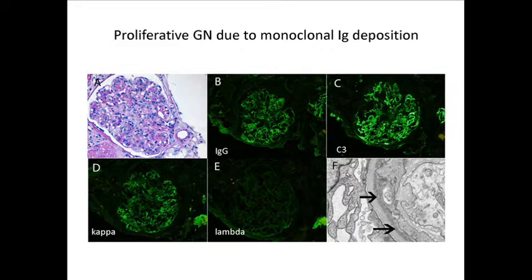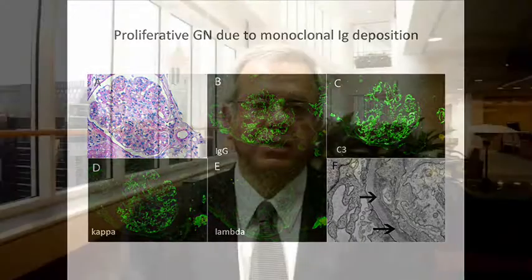You can clearly see in this figure that there is a proliferative glomerulonephritis. On immunofluorescence microscopy, staining for IgG kappa and lambda is completely negative. Electron microscopy shows small subendothelial or capillary wall deposits. This is a straightforward mechanism: direct deposition of monoclonal immunoglobulins causes a proliferative GN.